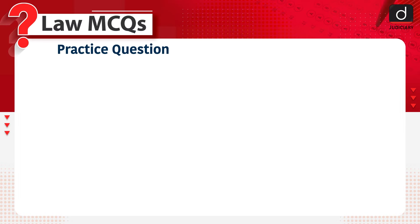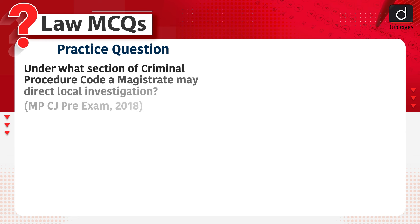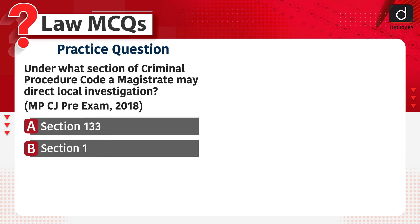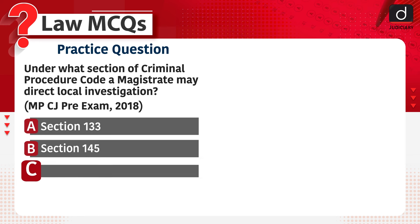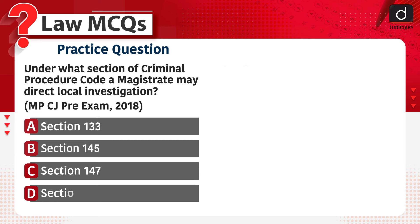Now it's time for the practice question. Ab bari hai abhyas prashn ki: Under what section of the Criminal Procedure Code may a magistrate direct a local investigation? Section 133, Section 145, Section 147, or Section 139?